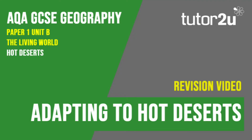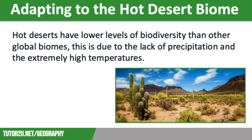Welcome to this Tutor2U revision video that looks at the different ways that plants and animals adapt to the harsh conditions in the hot desert biome. This is part of Paper 1, Unit B, The Living World. Hot deserts have lower levels of biodiversity than other global biomes. This is due to the lack of precipitation, which tends to occur only for very short periods when it does rain, and the extremely high temperatures. Plants and animals have to make adaptations to be able to survive in such harsh conditions.